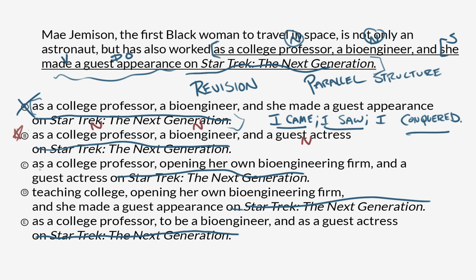Answer C: 'as a college professor, opening her own bioengineering firm, and a guest actress.' We've got a noun for 'college professor,' then a participle — a verb behaving as a noun — and then a noun again. So it's not consistent: noun, participle, noun. Also, 'worked as opening' isn't a conventional expression. So in addition to being inconsistent, we also have this non-standard phrase 'as opening.' Cross that off.